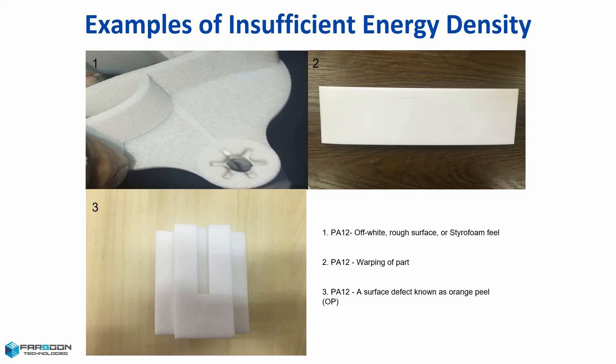Here we have some examples of insufficient energy density. In picture number one, we have a part that suffered from not enough laser power during the sintering process — each layer was not able to fuse correctly from one to the next. Number two, we have a part made out of PA-12 that has been warped due to the part being thin and the scan speed being too high. Picture number three, we have a part also made out of PA-12 that suffers from a surface defect called orange peel, due to laser power and part temperature being too low.